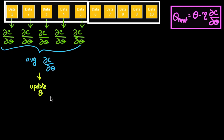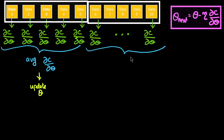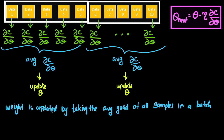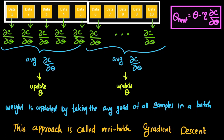This average derivative is substituted into the equation to update the theta value. The same process is repeated for all other batches: take the next batch, find the derivatives, take the average, and update theta. The weight is updated by taking the average gradient of all samples in a particular batch. This approach is called mini batch gradient descent.